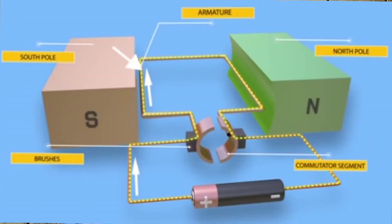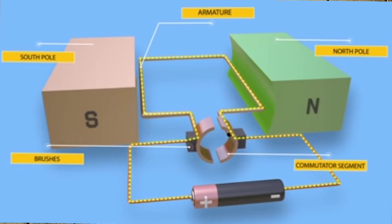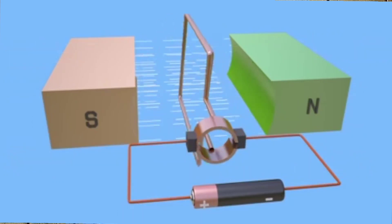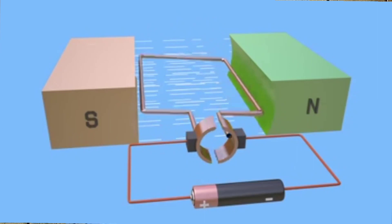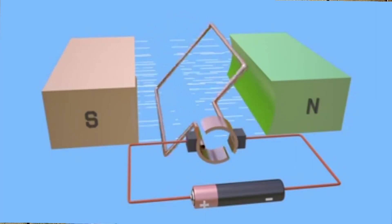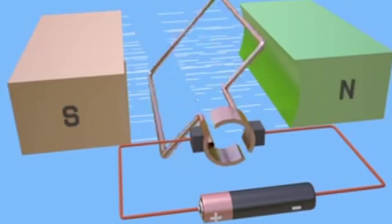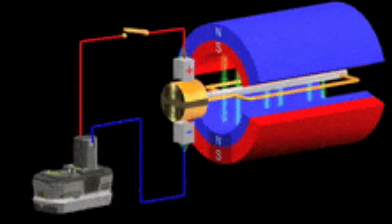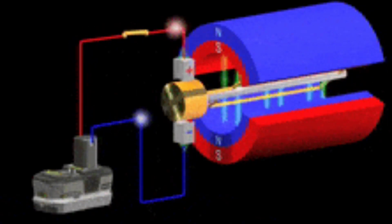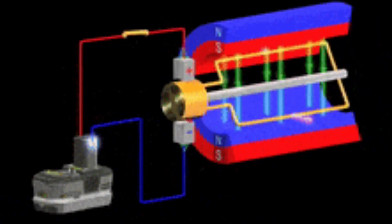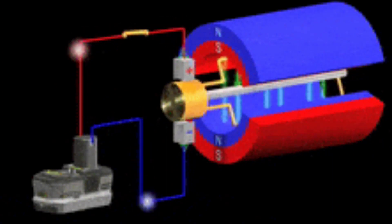Now let's look at how a DC motor works. A magnetic field arises in the air gap when the field coil is energized. This magnetic field is in the direction of the radii of the armature, entering from the north pole side and exiting at the south pole. Conductors on the opposite side experience a force of the same intensity but in the opposite direction, and these two opposing forces create a torque that causes the armature to rotate.